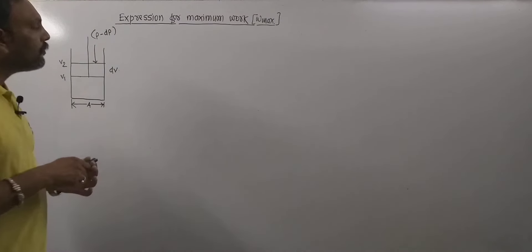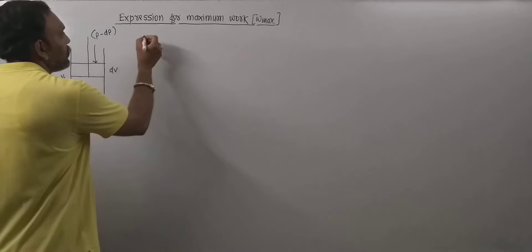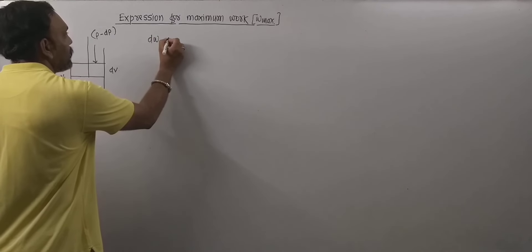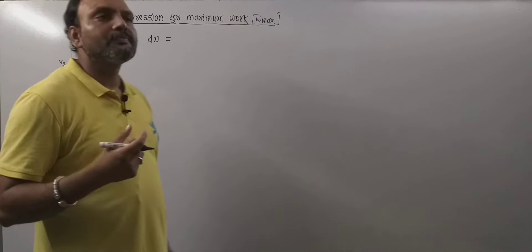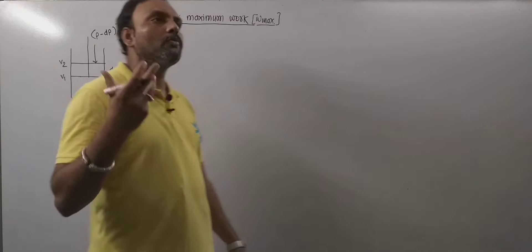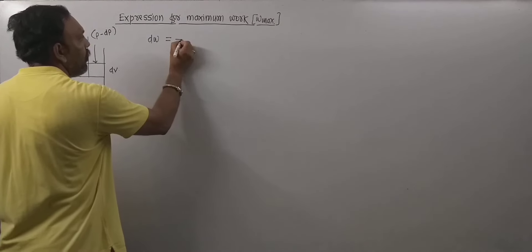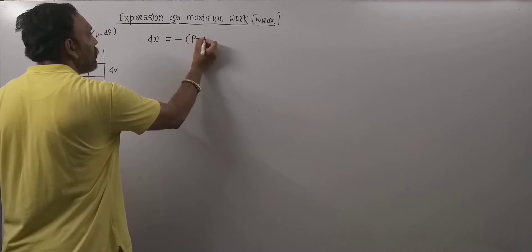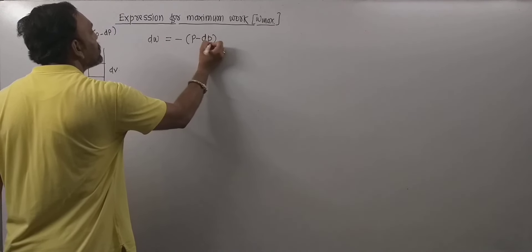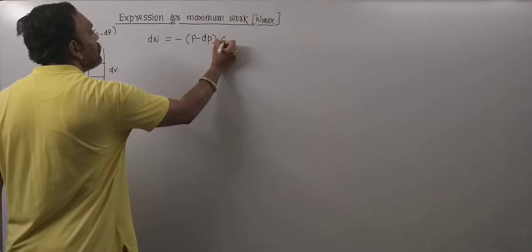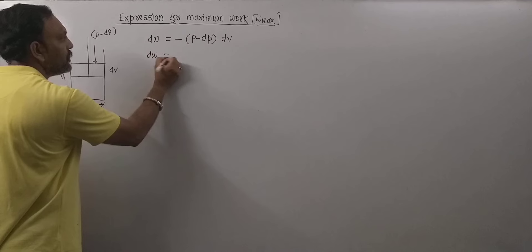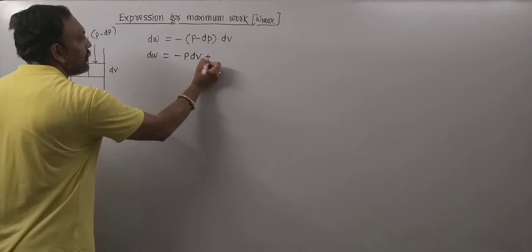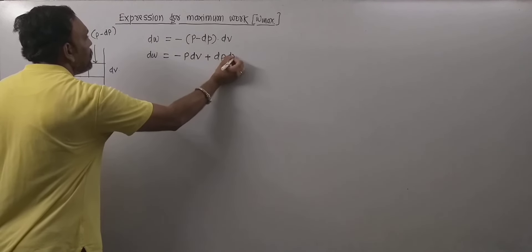Now we all know very well that the pressure-volume work for such type of system is given as the pressure into change in volume. Now the net pressure acting on piston is p minus dP and change in volume is dV. So this can also be given as dW equals minus (p - dP) dV, or dW equals minus p dV plus dP dV.